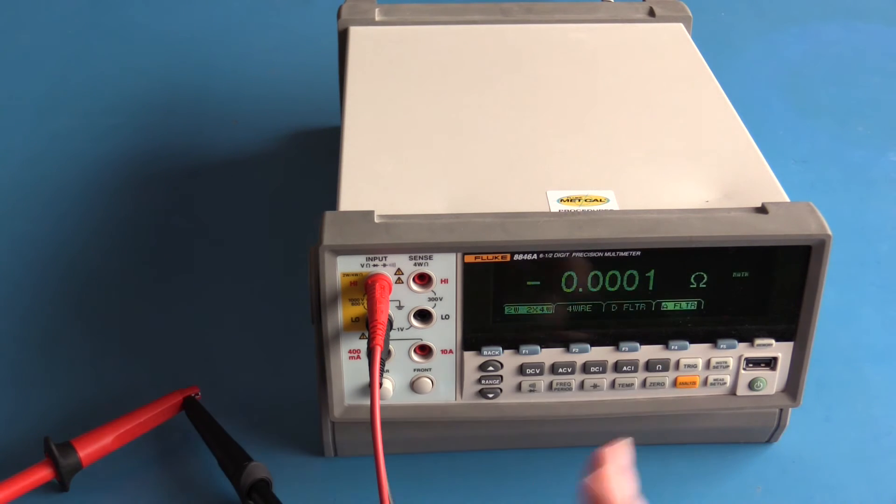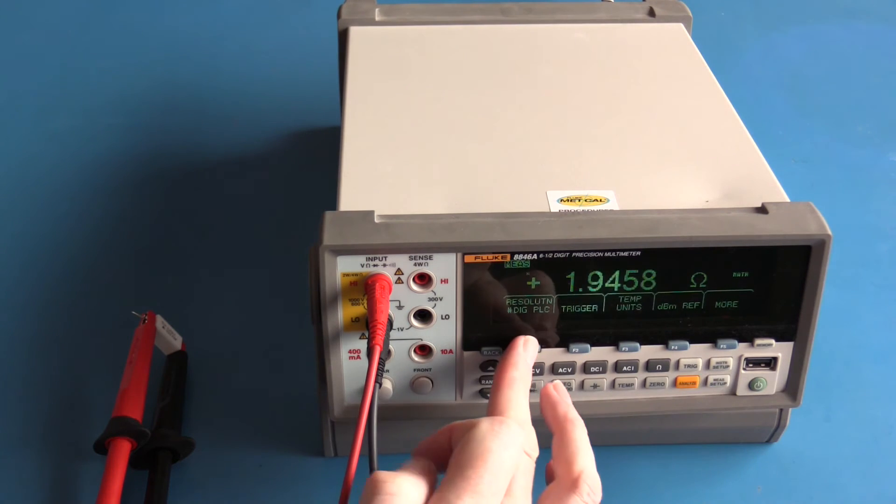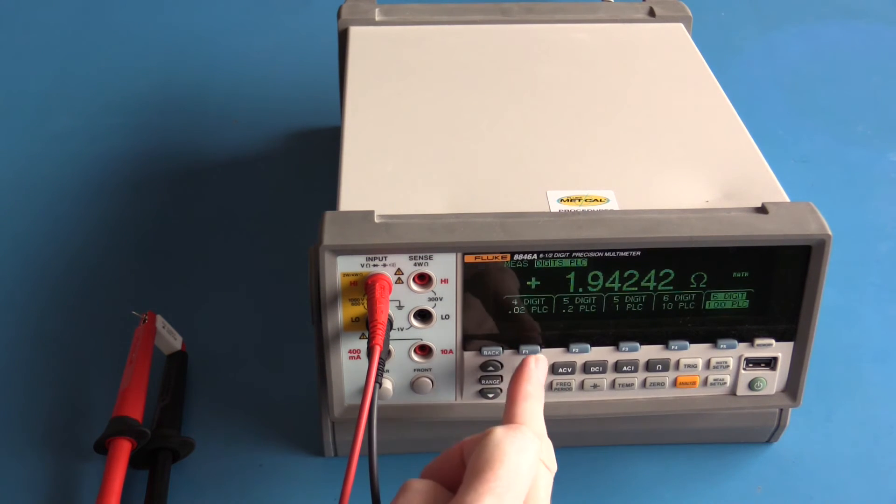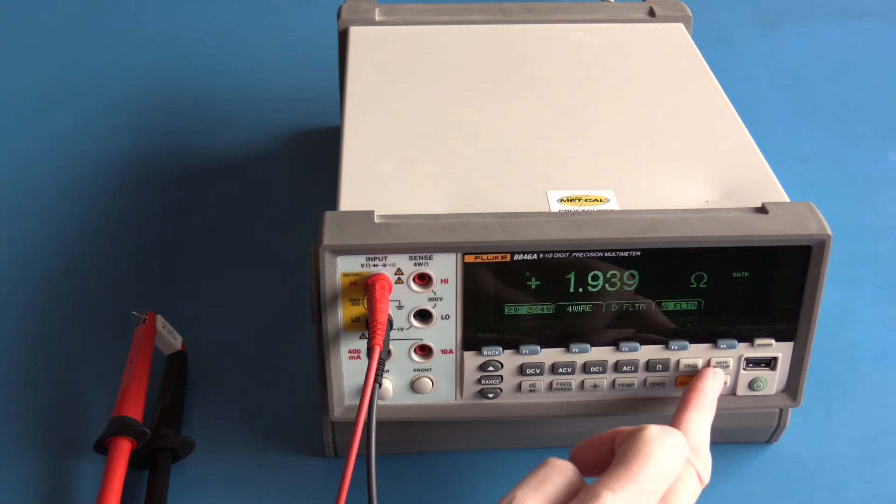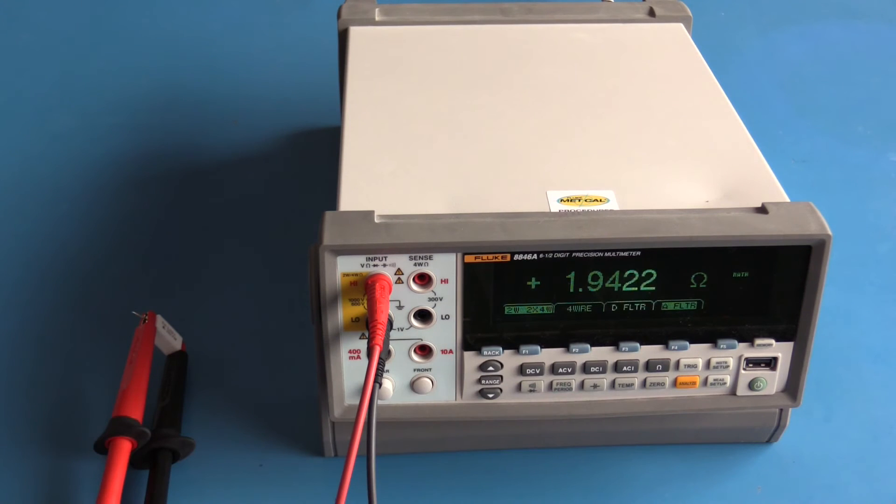I'm fairly happy with that. We're measuring this 2.2 ohm resistor right around 2 ohms. I'm going to increase the measurement resolution. By increasing the resolution I have slowed down the measurement considerably. I'm now going to change to the lowest resolution. My update rate now is very very quick. I'm now going to change back to my preferred five and a half digit resolution.